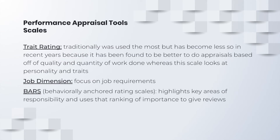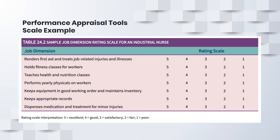One type of tool used during performance appraisals is scales, and there are a few different types. Trait rating was traditionally used the most but has become less common in recent years because it has been found better to do appraisals based on quality and quantity of work, whereas this scale looks at the individual employee's personality and traits. There are also job dimension scales, which focus on the job requirements, or the BARS — behaviorally anchored rating scales — which highlights key areas of responsibility and uses a ranking of importance to give different reviews. Here is an example of a job dimension rating scale, which lists different aspects of a specific job on the left-hand side and has a numeric system on the right. A 5 would be excellent and a 1 would be poor, and these scores would be added up to give a quantitative value to a performance appraisal.